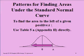To find the area to the left of a given positive z value, again use the table directly. If we are trying to find the area to the left, that is what the table is telling us.